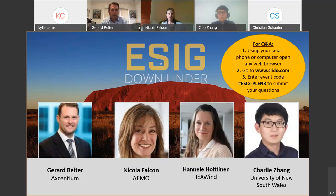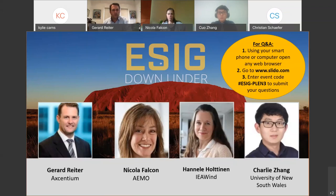As power systems are evolving around the world, we're seeing increasing amounts of distributed energy resources added to the distribution system — generation, batteries, and smart loads. These resources are making a meaningful contribution to improving power system outcomes for consumers, but they're also creating challenges to the way we've traditionally managed the power system. We're seeing a blurring of the line between transmission and distribution. Today's session focuses on planning, forecasting, modeling, local flexibility markets, and maintaining stability.